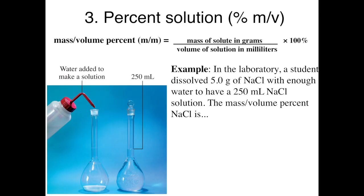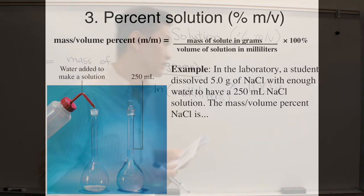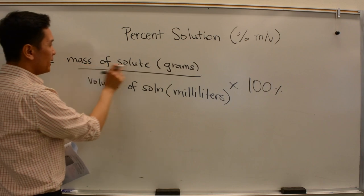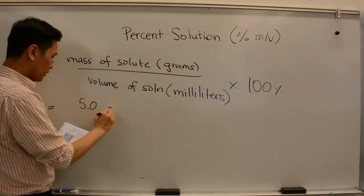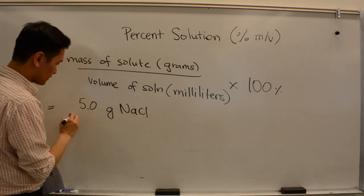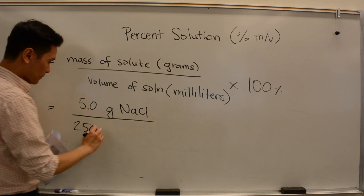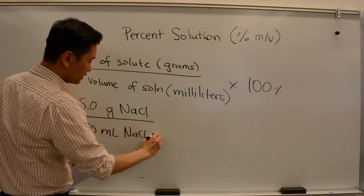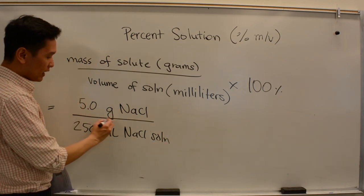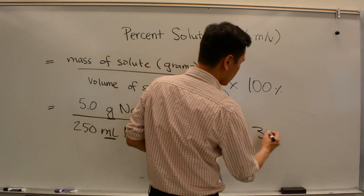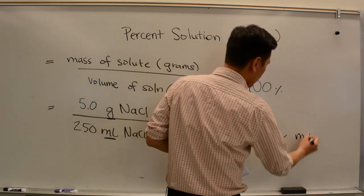Let's check this with an example. In the lab, a student dissolved 5 grams of sodium chloride with enough water to have 250 mL of sodium chloride solution. What is the mass per volume percentage? The mass of the solute is 5.0 grams of NaCl. The volume of the solution is 250 mL. Notice we use grams and milliliters — correct units for this type. 5.0 grams divided by 250 mL, times 100%, gives 2.0% mass over volume NaCl.